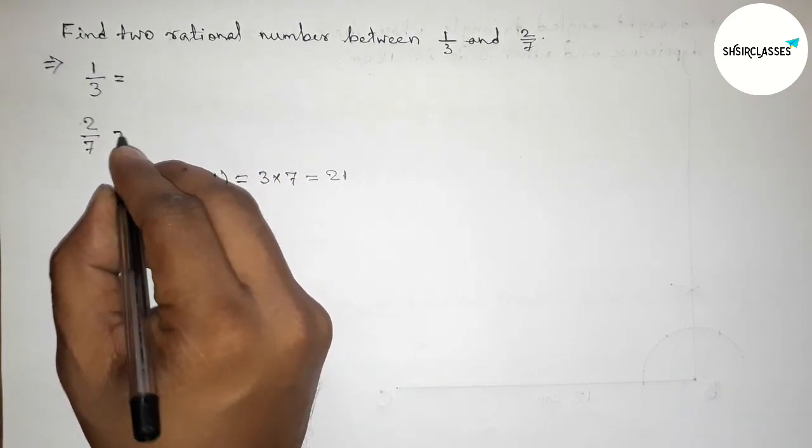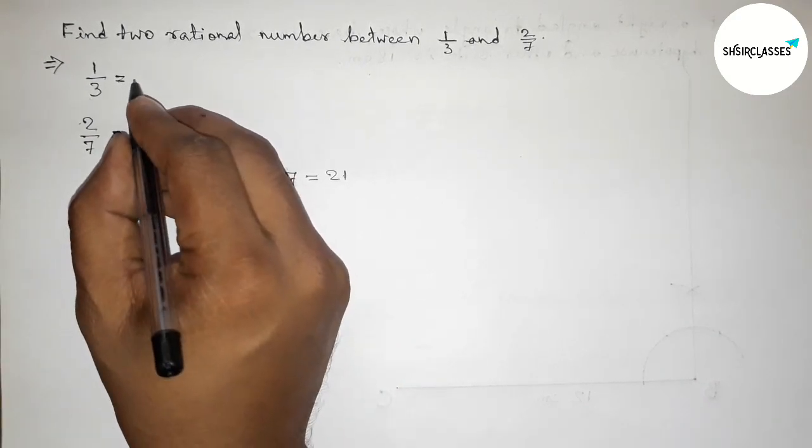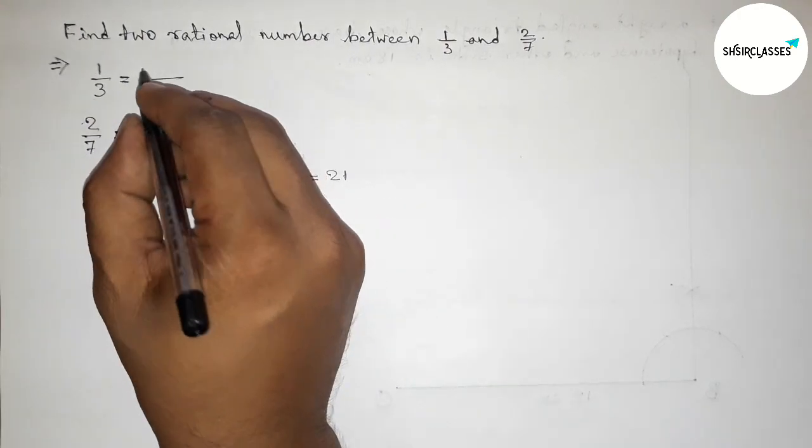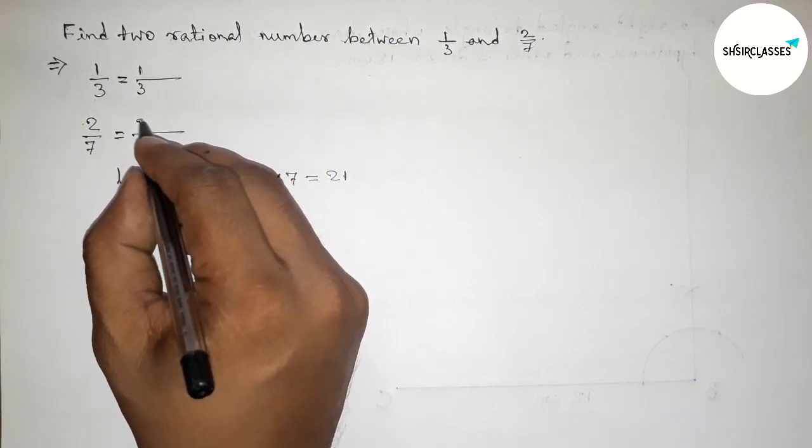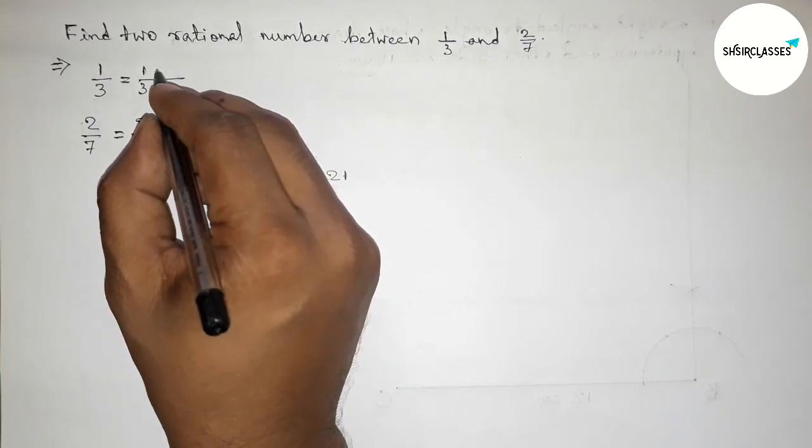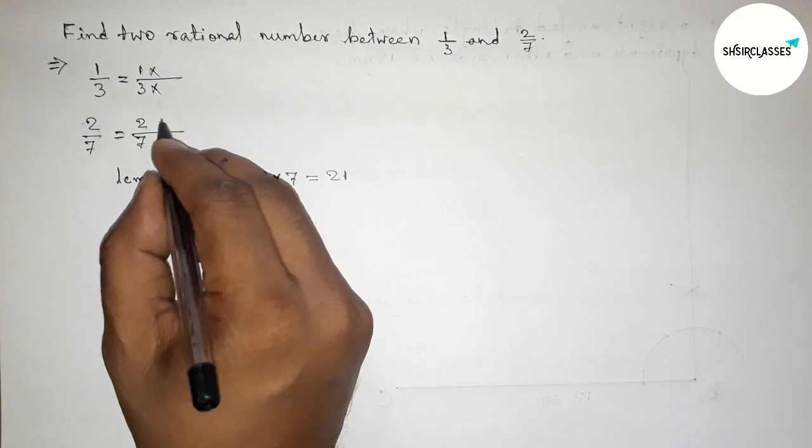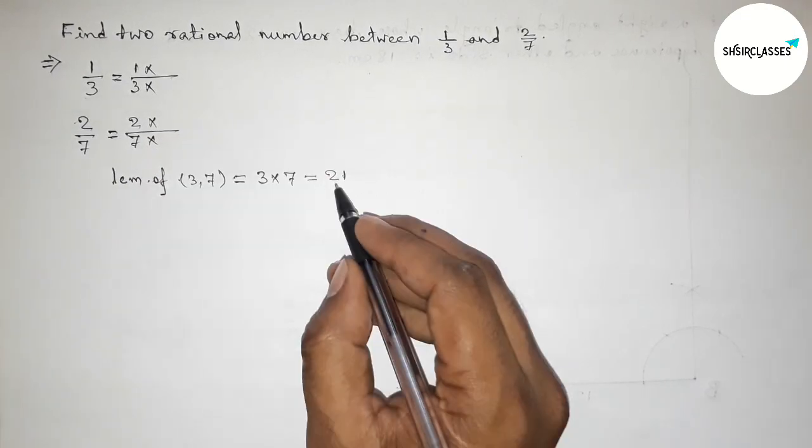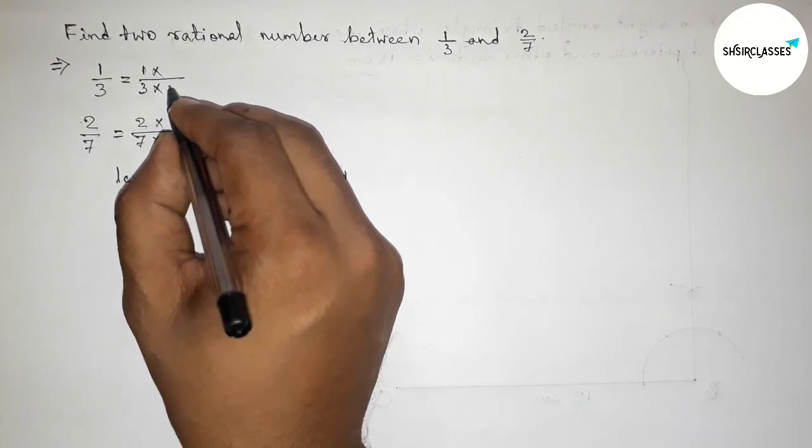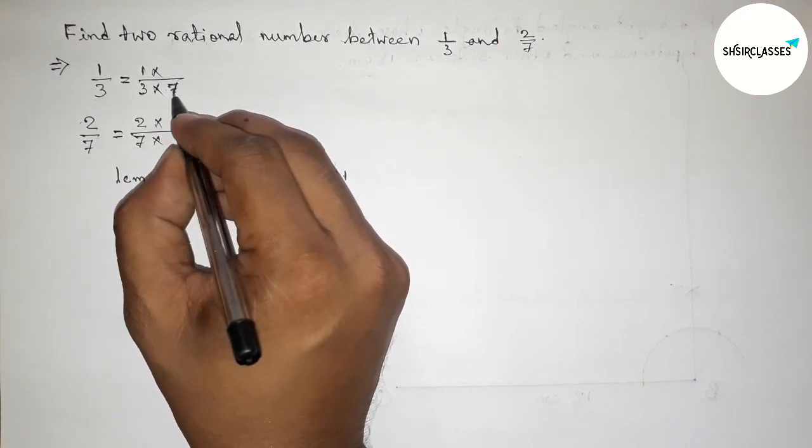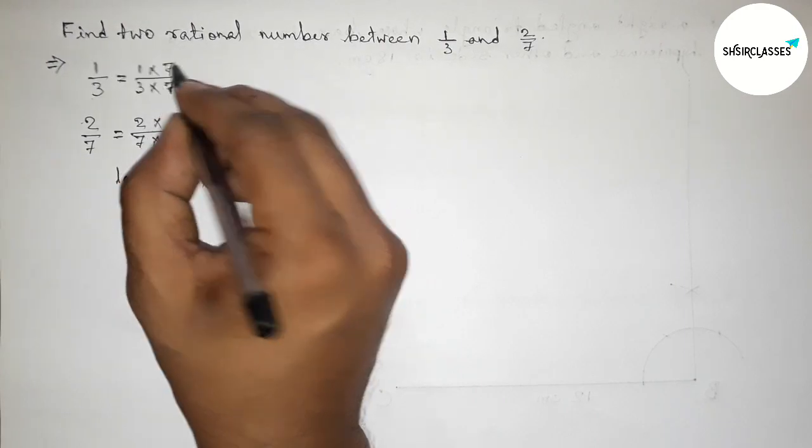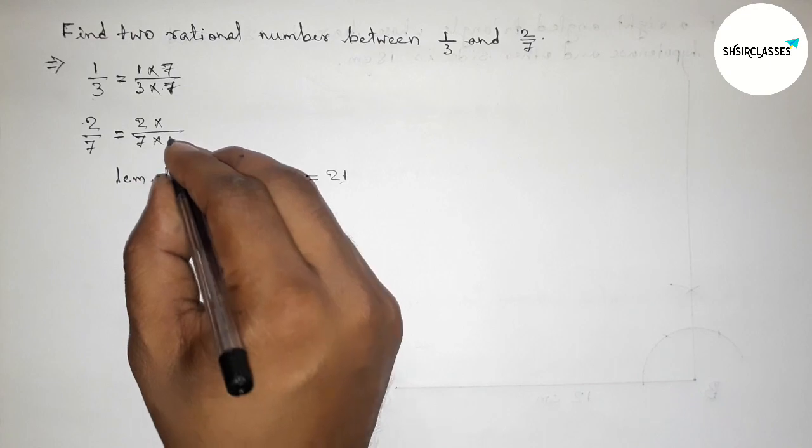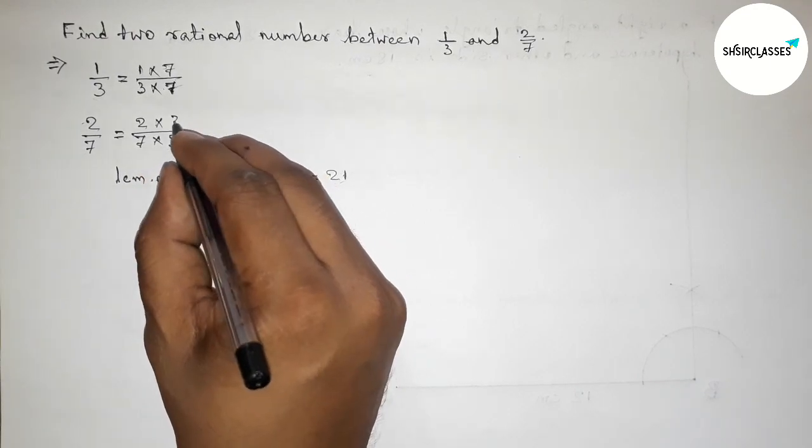Now doing some important calculation here. First write down here 1/3 and 2/7, and taking multiplication up and down this way. Now first of all making 21, so 3 × 7 = 21, so taking 7 up and down. Again making 21 here, so 7 × 3 = 21, so taking 3 up and down.